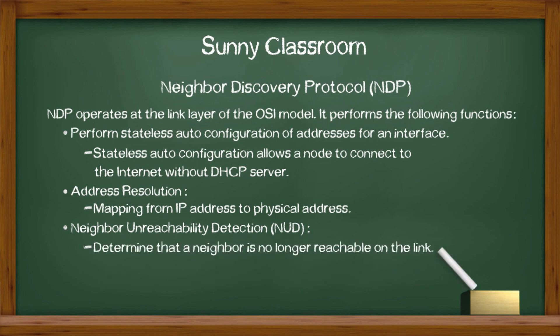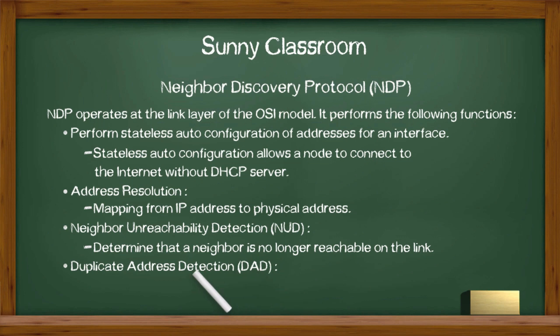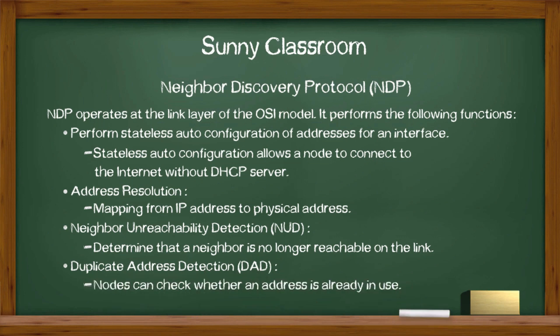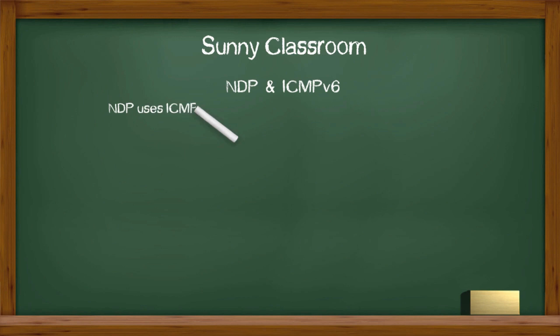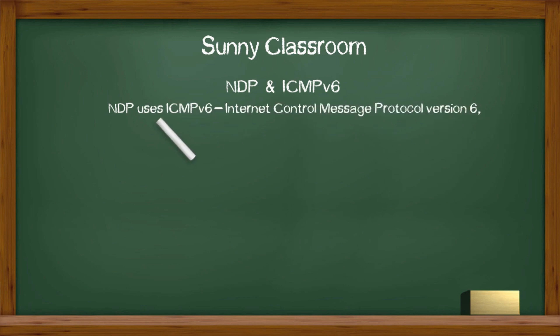determines that a neighbor is no longer reachable on the link. And Duplicate Address Detection, or DAD, by which nodes can check whether an IP address is already in use. NDP uses ICMPv6, Internet Control Message Protocol version 6, which is an integral part of IPv6.